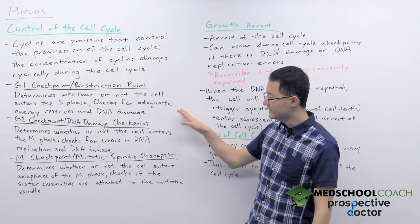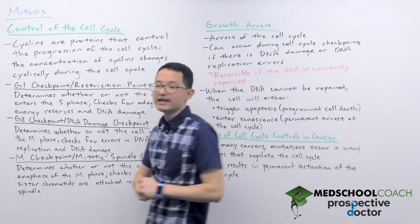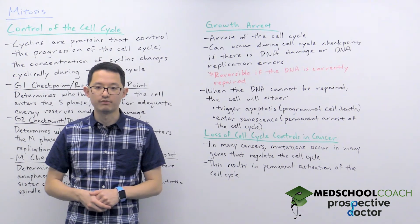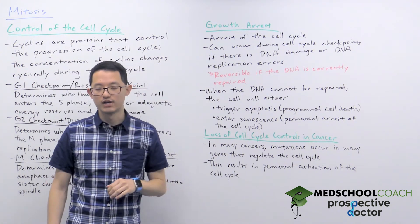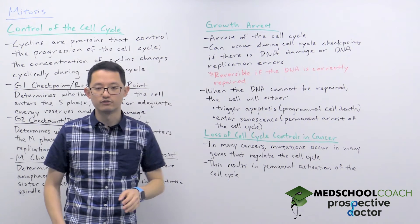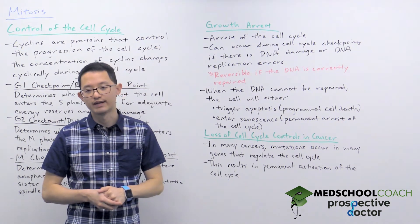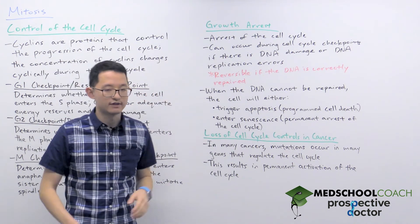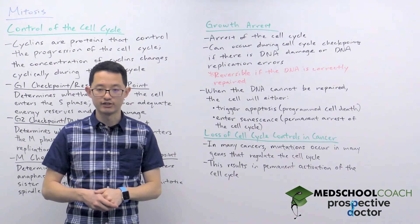Those are the different checkpoints during the cell cycle. Let's now look at what happens if a cell does not pass one of these checkpoints. At that point, growth arrest occurs — the cell cycle is stopped because the checkpoint has not been passed. This can occur during the cell cycle if there is DNA damage or some error in DNA replication.